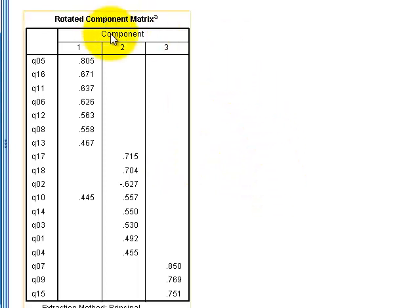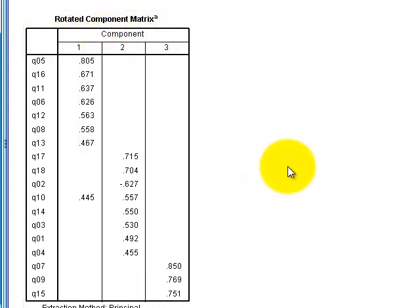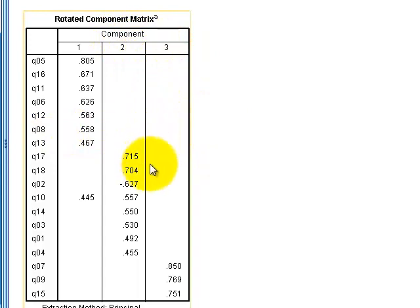The rotated component matrix tells us which question loads under which factor. Factor one includes questions 5, 16, 11, 6, 12, 8, and 13. Factor two includes questions 17, 18, 12, and a few others. Factor three has only three questions: 7, 9, and 15. Make note of which items load under each factor — we'll need that for the reliability analysis.